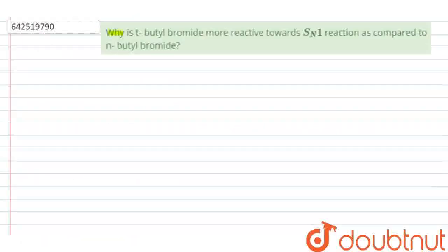Question given here is, why is tertiary butyl bromide more reactive towards SN1 reaction as compared to n-butyl bromide?